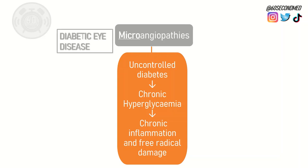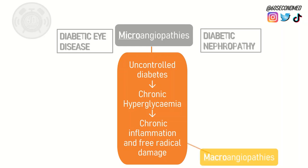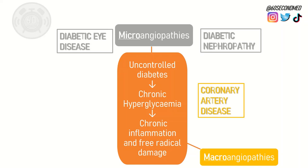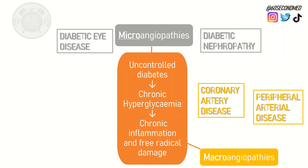This can cause diabetic eye disease in the retina or diabetic nephropathy in the kidneys. Macroangiopathies however refers to the accelerated atheroma formation, again secondary to the chronic inflammation. This can lead to diseases such as coronary artery disease, peripheral arterial disease, or a stroke.